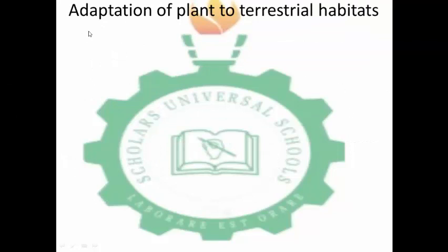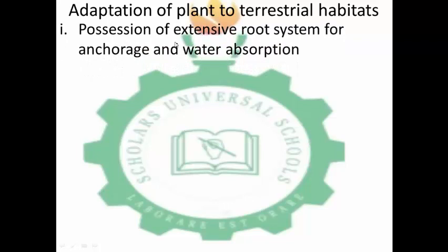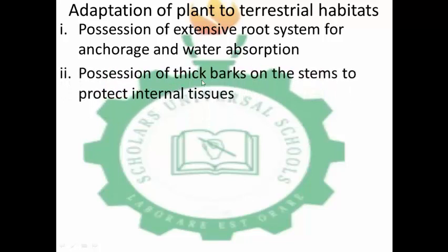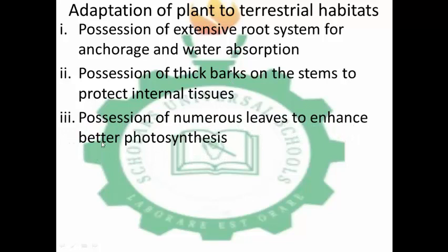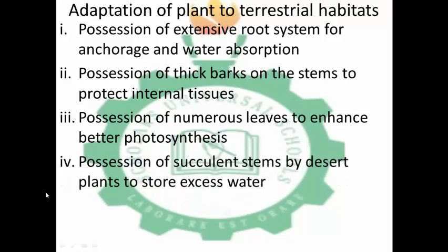Adaptation of plants to terrestrial habitats — these include those that live in the desert and those that live among us. Possession of extensive root systems for anchorage and water absorption. Possession of thick bark on stems to protect internal tissues. Possession of numerous leaves to enhance better photosynthesis. Possession of succulent stems by desert plants to store water, because water is scarce in the desert.